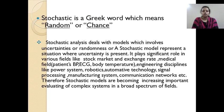Stochastic is a Greek word which means random or chance. Stochastic models involve uncertainty or randomness; the stochastic model represents a situation where uncertainty is present. It plays significant roles in all fields like the stock market, exchange rate, engineering fields, and medical fields. In medical fields, examples of randomness include body temperature, ECG, and patient blood pressure. All these examples are dealt with randomness.